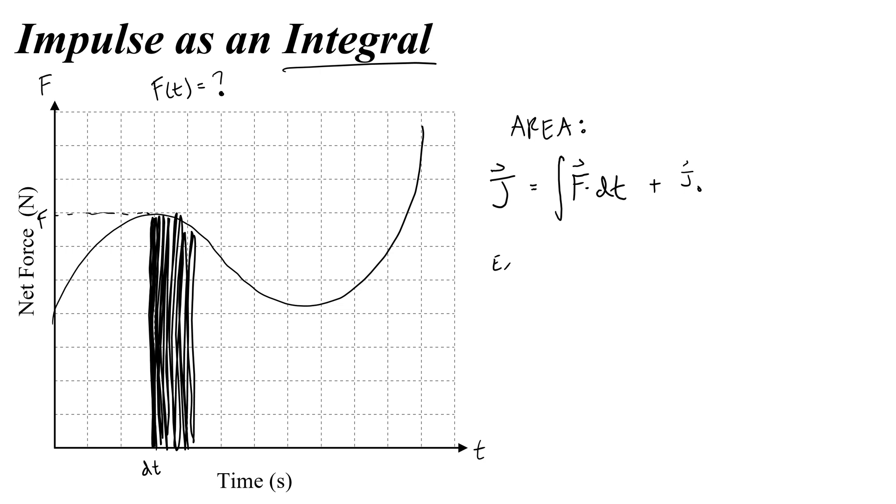An example would be if F was 3t and you needed to find J indefinitely, then you would say the antiderivative of 3t with respect to dt, which gives you 3 over 2 t squared. And instead of saying plus c, you could say plus c if you want. It's more common to think, oh well that c is actually whatever the momentum is in the beginning, the initial momentum. So that's how you can do it indefinitely.